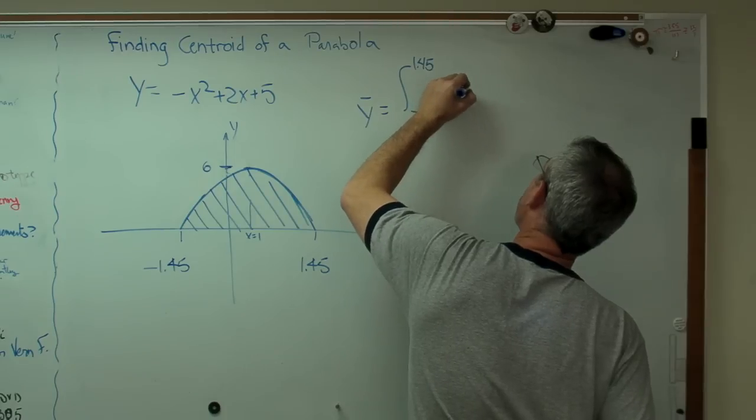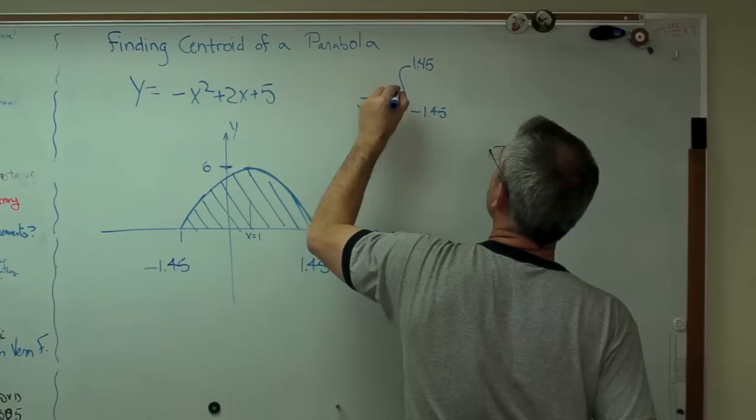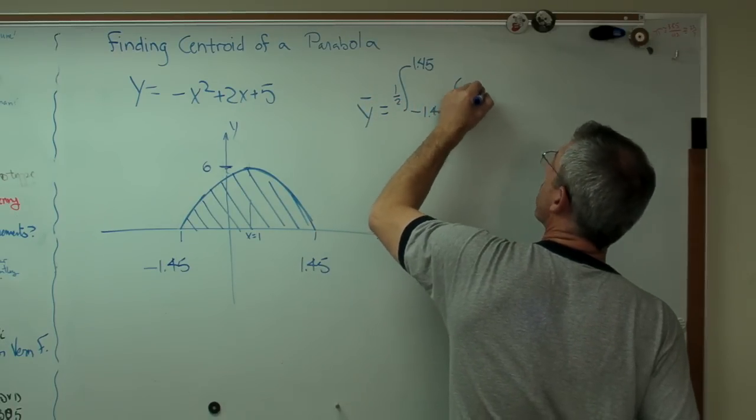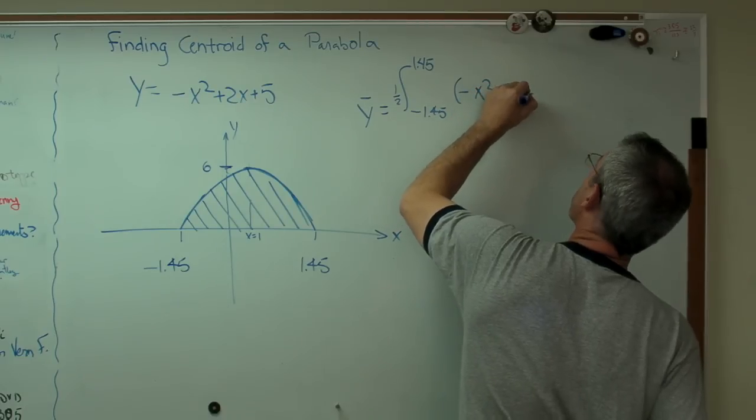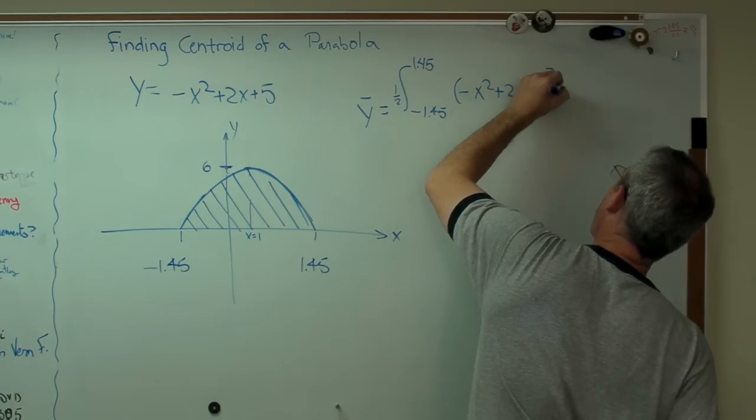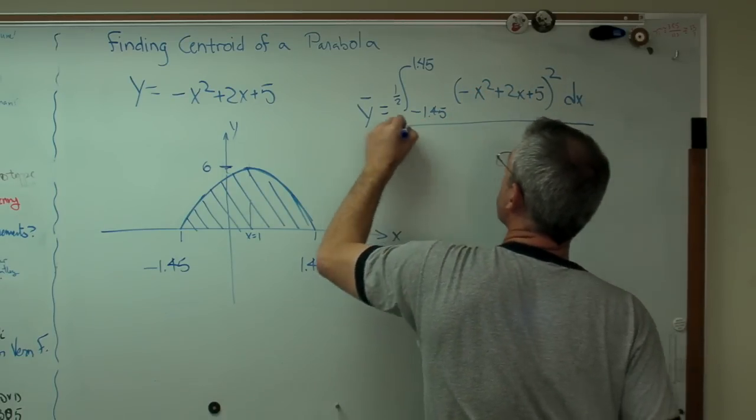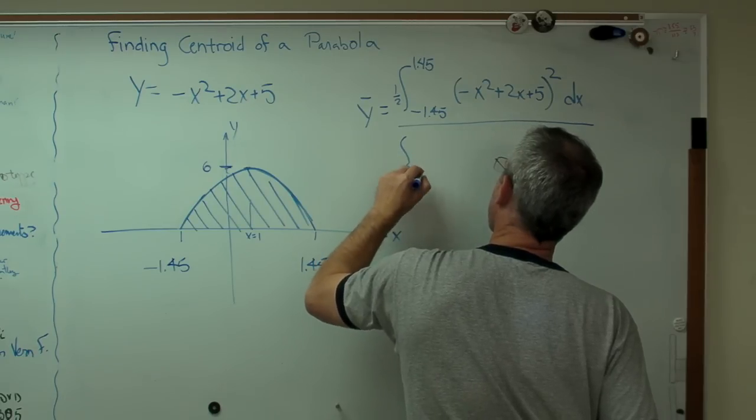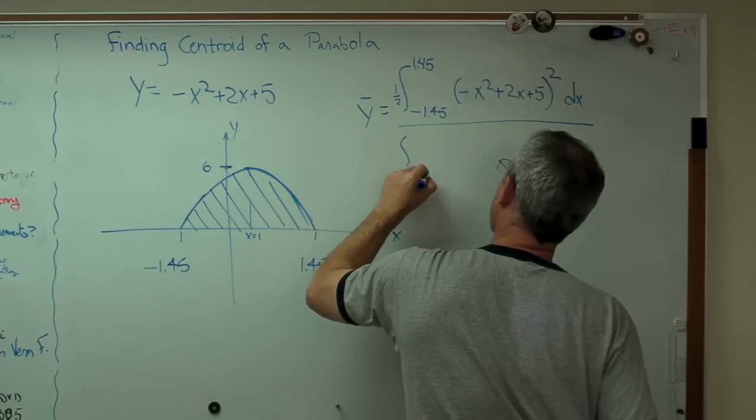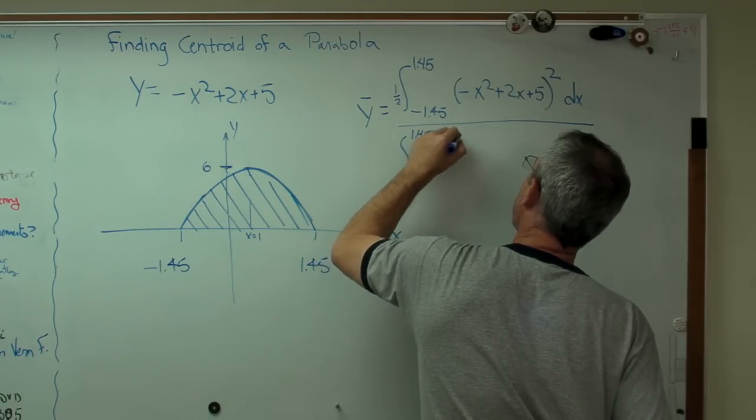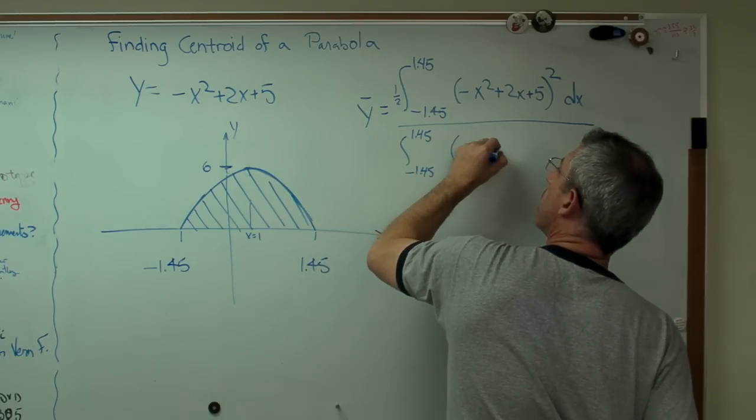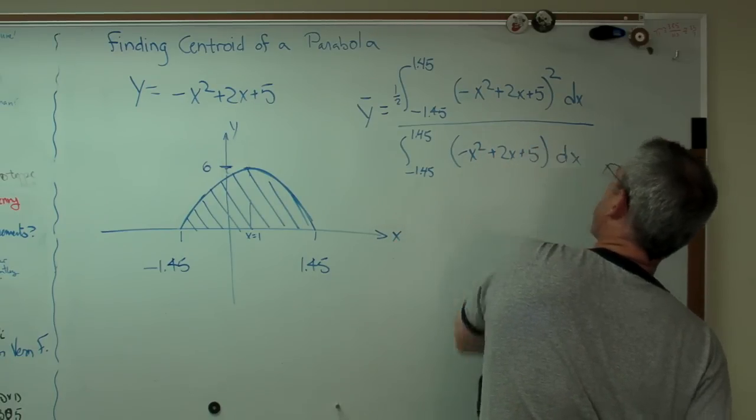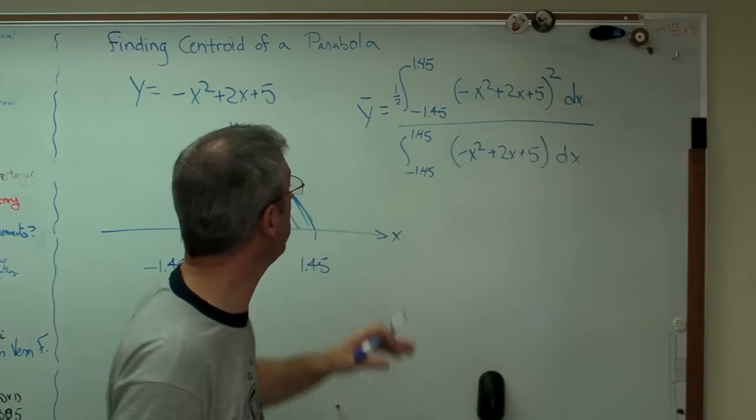One half. Let's put the 1 half out front. So, I've got minus x squared plus 2x plus 5 squared dx. And then, minus 1.45 to 1.45 minus x squared plus 2x plus 5 dx. Exact same thing.